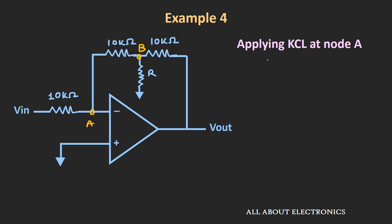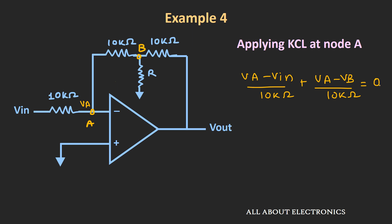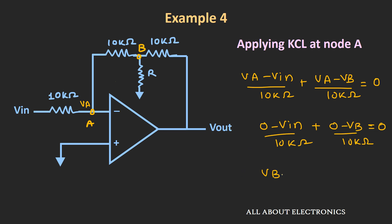First, let's apply KCL at node A. Let's assume the voltage at this node is Va. Applying KCL, we can write (Va minus Vin) divided by 10kΩ plus (Va minus Vb) divided by 10kΩ equals 0. The non-inverting terminal is at ground potential, so because of virtual ground, Va is also equal to 0. Substituting, we get (0 minus Vin) divided by 10kΩ plus (0 minus Vb) divided by 10kΩ equals 0, which simplifies to Vb equals minus Vin.